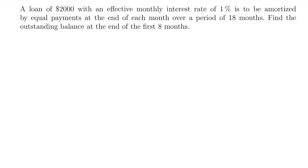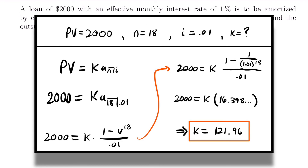Here's the next example: a loan of $2,000 with an effective monthly interest rate of 1% is to be amortized by equal payments at the end of each month over a period of 18 months. Find the outstanding balance at the end of the first eight months. The focus is to determine an outstanding balance at a particular moment in time without going through all the work step by step from time zero. First, we need to find the payment amount K. You can pause the video to look over the work for finding K.